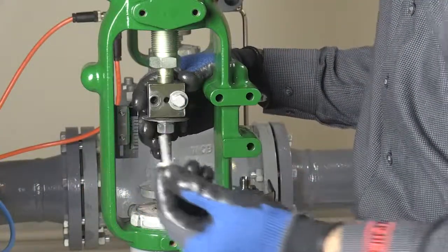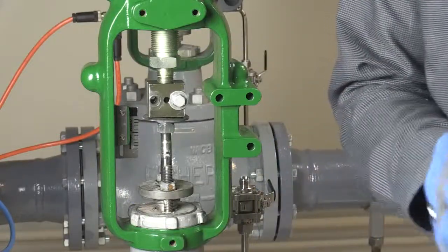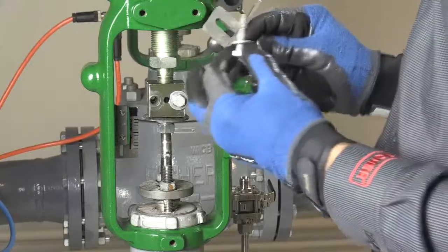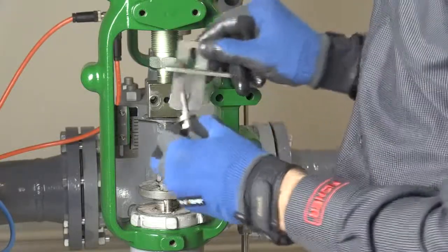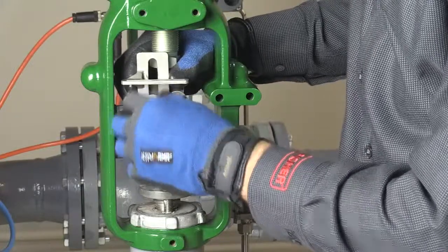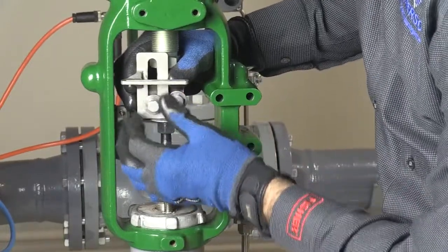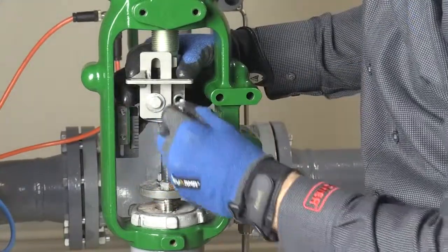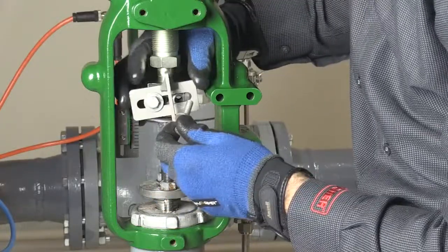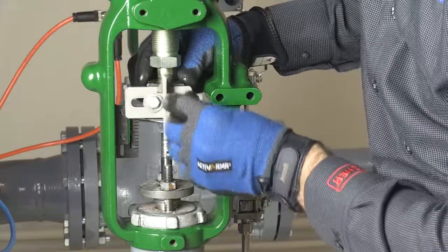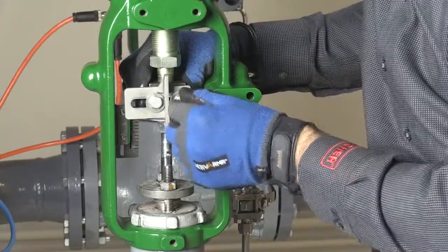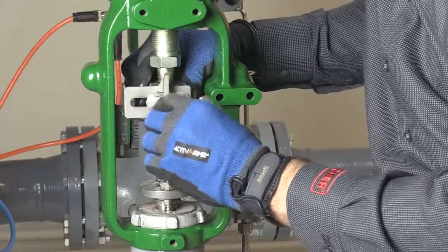To attach the connector arm, first remove one of the two bolts from the coupling block. Then, install the bolt through the slot in the connecting arm and tighten. Repeat this process with the other bolt. Leave the bolts loose because we'll fine-tune the alignment here shortly.